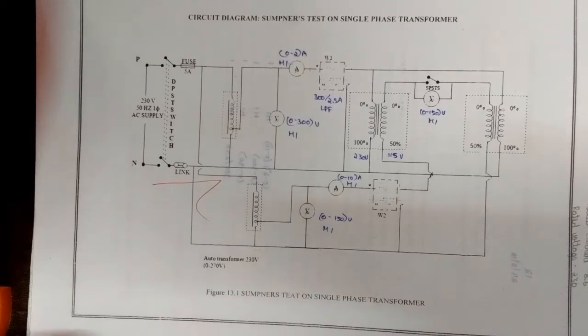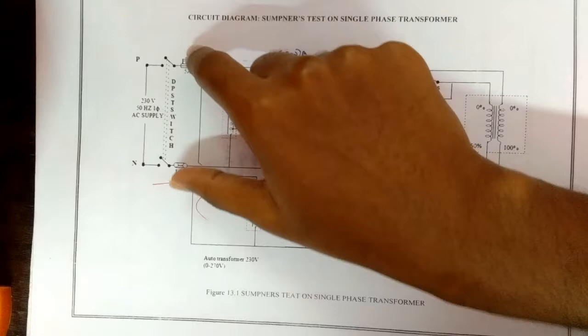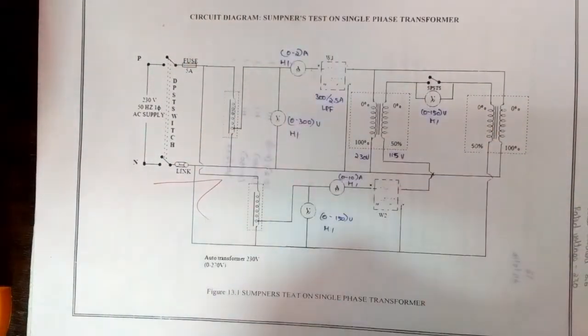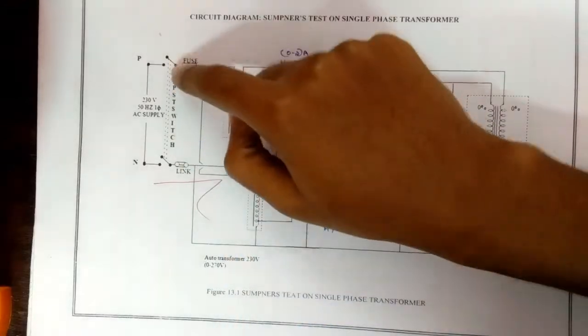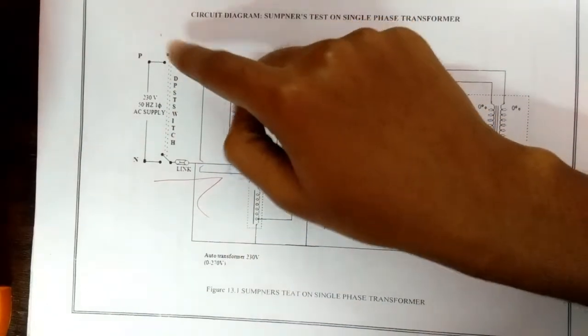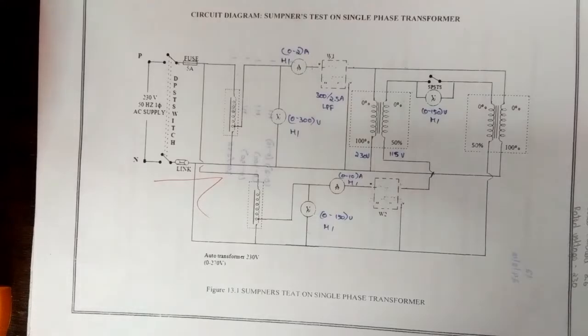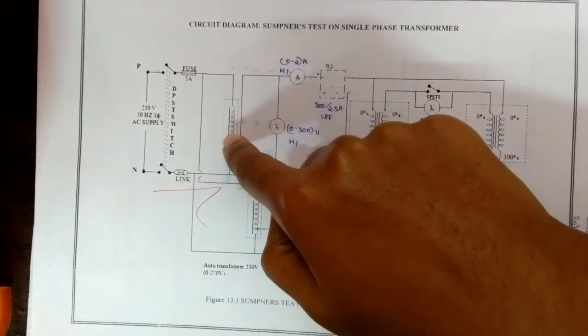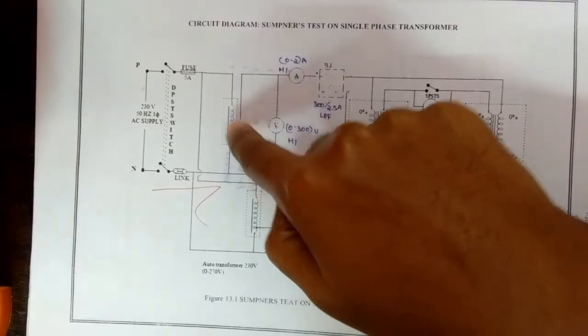Before we move to the procedure, we should consider the precautions. The fuse is selected such that 120% of its rated current. The DPST switch is kept open at initial condition. The autotransformer is kept at minimum position at the time of starting and at the end.